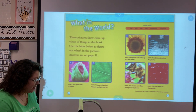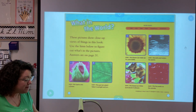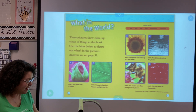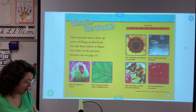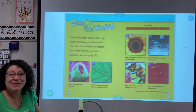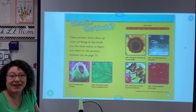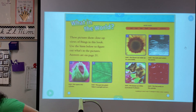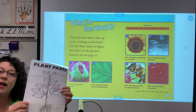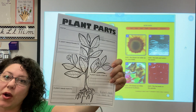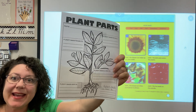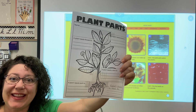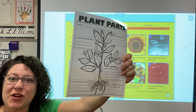What in the world? These pictures show close-up views of things in this book. Use the hints below to figure out what's in the pictures — the answers are on page 31. If you want to go to Epic Books and try this little fun game, go ahead. Next we are going to fill out our diagram. You can print the page or just draw it on a piece of paper. We'll come back and learn about the functions and structures of our plant.